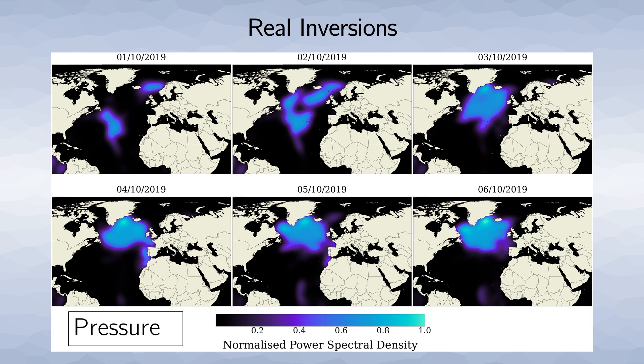Additionally, we compare the models to ocean surface pressure maps which, in theory, should correspond to the sources of secondary micro-seisms. Both the models and pressure maps show very similar features.